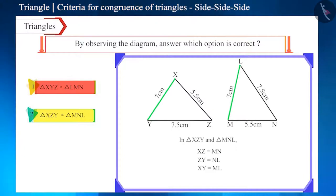So we can say that triangle XZY and triangle MNL are congruent. Therefore, this option is correct.